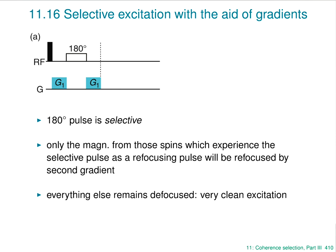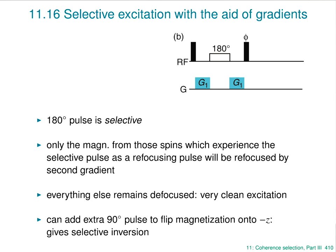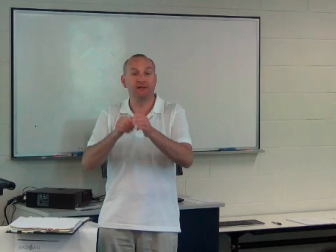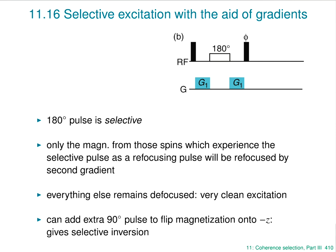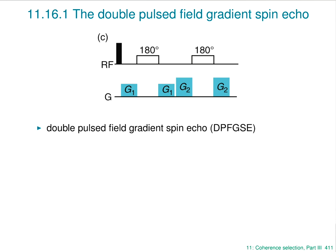If instead of selective excitation you wanted to do selective inversion — which is what you'd want in an NOE experiment — all you need to do is put another 90 degree pulse on the end. That magnetization which has been refocused in the x-y plane can be flipped onto the minus z-axis. So using this sequence you can also achieve selective inversion, and again, all the other signals are dephased at this point.